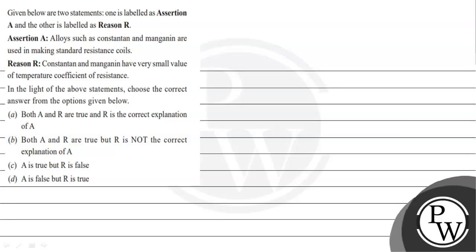Let's read the given question. The question states that given below are two statements: one is labeled as Assertion A and the other is labeled as Reason R. Assertion A is: alloys such as constantan and manganin are used in making standard resistance coils. Reason R is: constantan and manganin have very small value of temperature coefficient of resistance. Choose the correct answer from the options given below.